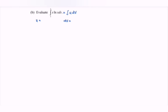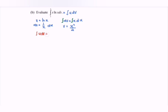So u will be ln x, and then the rest, dv equals x dx. Differentiating u with respect to x, du/dx of ln x gives us 1 over x. Then integrating dv, we have v equal to x squared over 2. So we apply the formula: integral of u dv equals uv minus integral of v du.